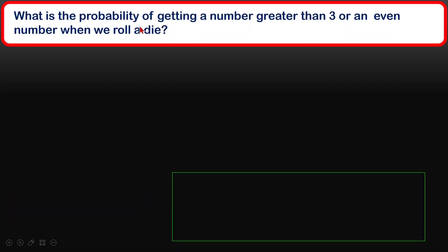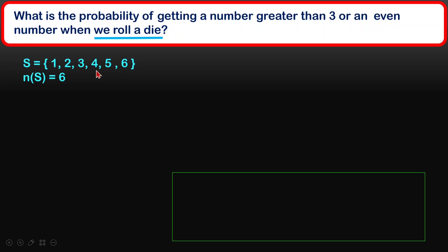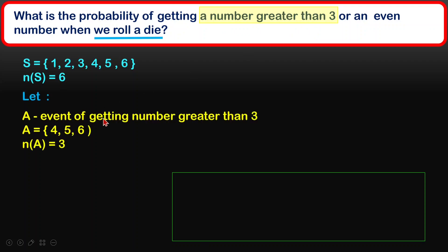What is the probability of getting a number greater than 3 or an even number when we roll a die? If one die is rolled, the sample space is {1, 2, 3, 4, 5, 6} — 6 outcomes total. The event of getting a number greater than 3 is {4, 5, 6}, so there are 3 numbers in that situation.